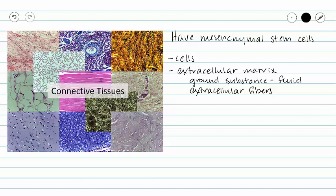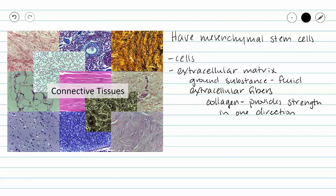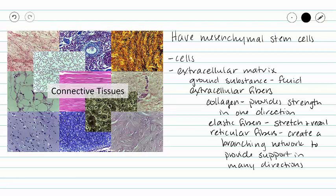We have three different types of extracellular fibers. We have collagen fibers which provide strength in the orientation of the fiber. We have elastic fibers which provide stretch and recoil. And lastly we have reticular fibers which create a branching framework to provide support in many directions. Very frequently our collagen fibers stain pink, our elastic fibers stain a dark purple, and our reticular fibers stain dark brown or black, or light blue.